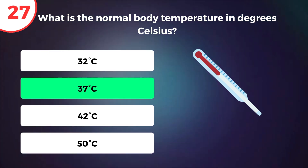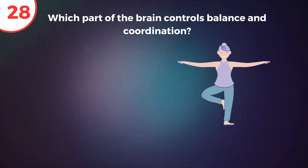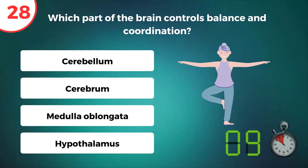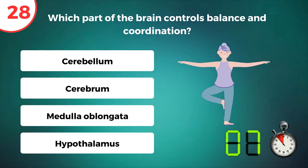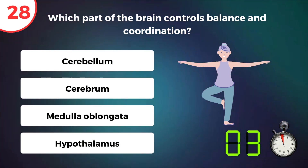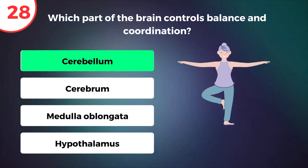37 degrees Celsius. Which part of the brain controls balance and coordination? Cerebellum.